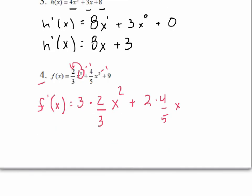We would want to simplify here, so let's say f prime of x is equal to, here some of you might recognize that we can reduce those 3's, and we have 2x squared plus 8 fifths x.